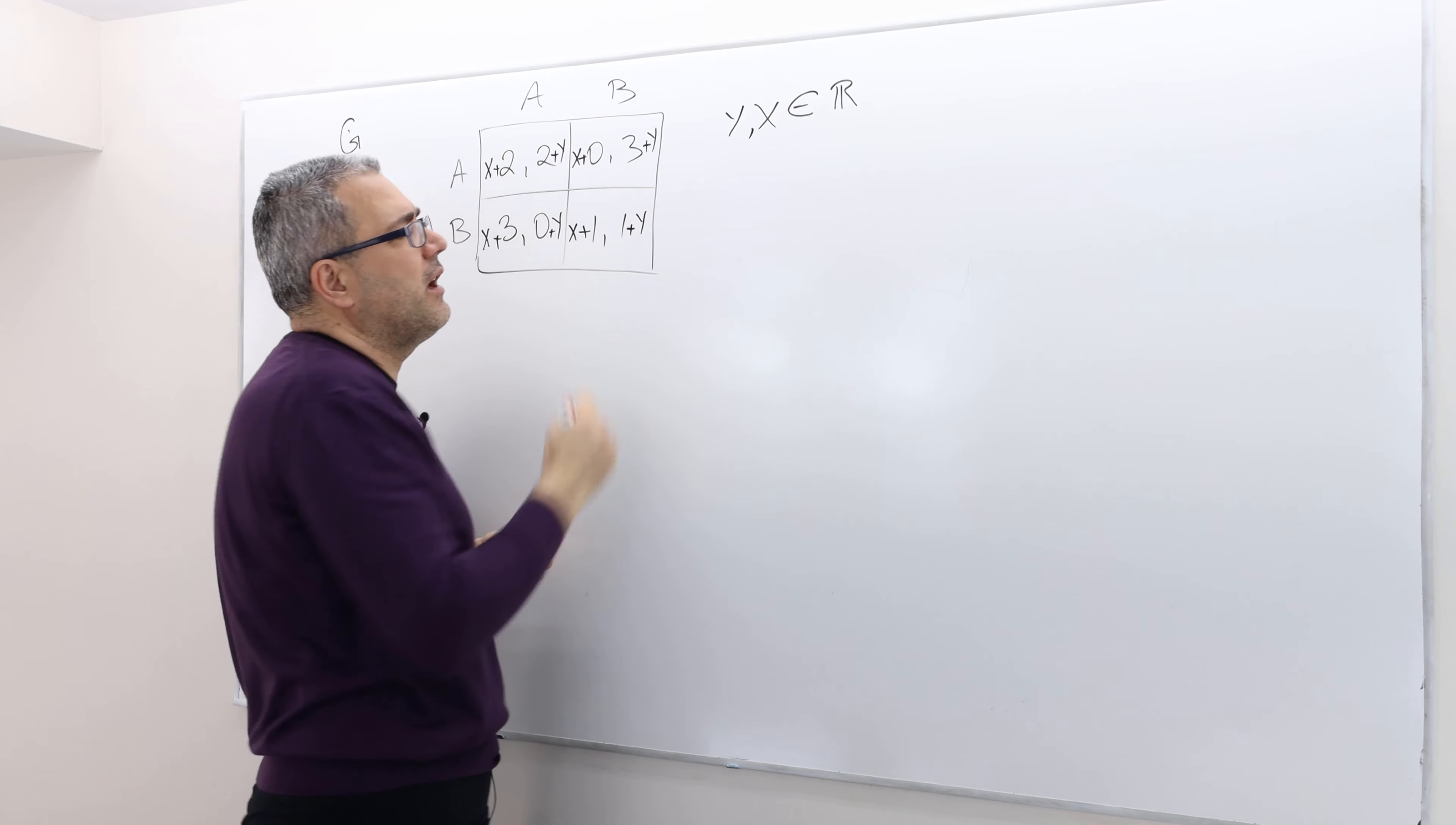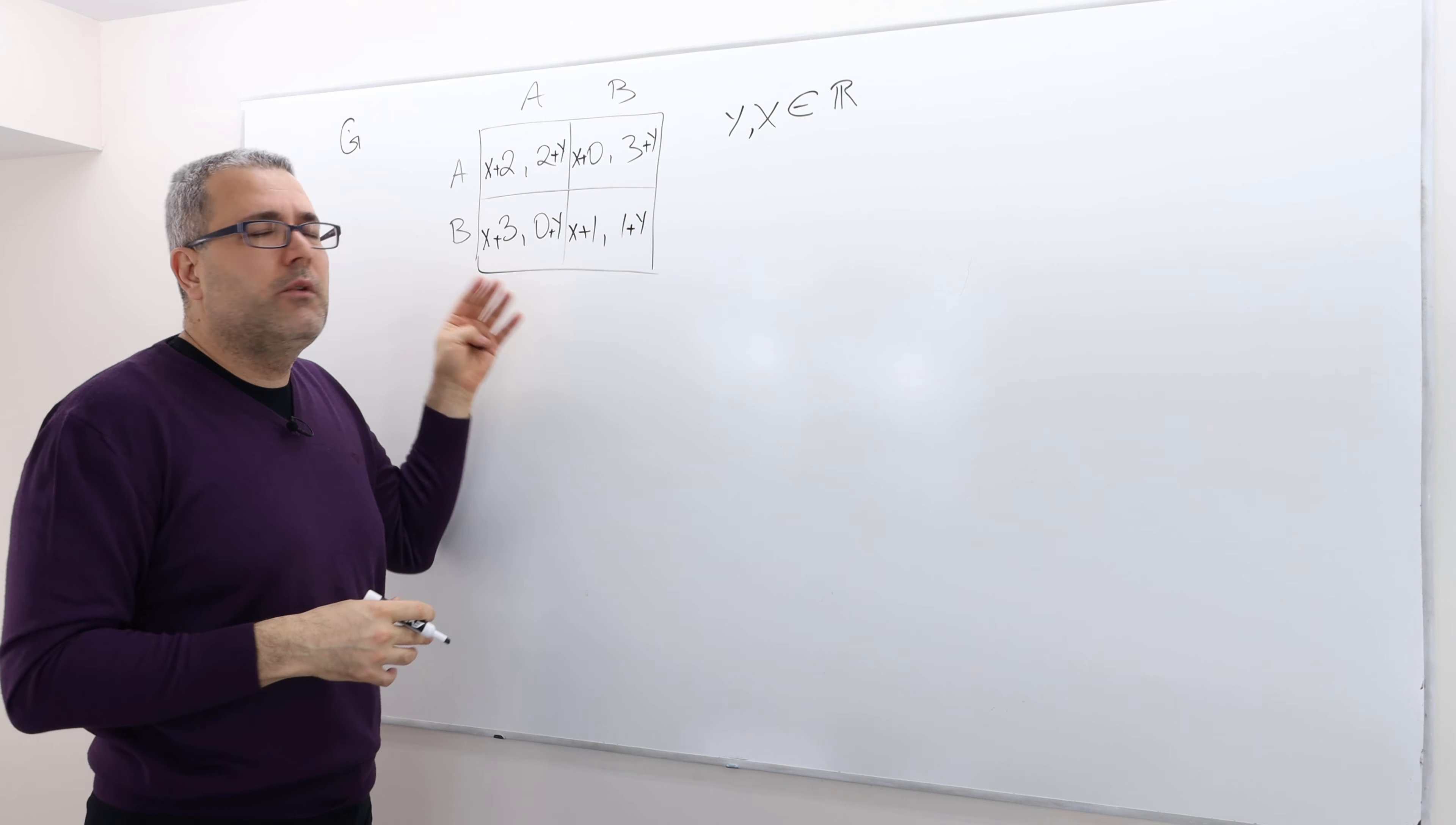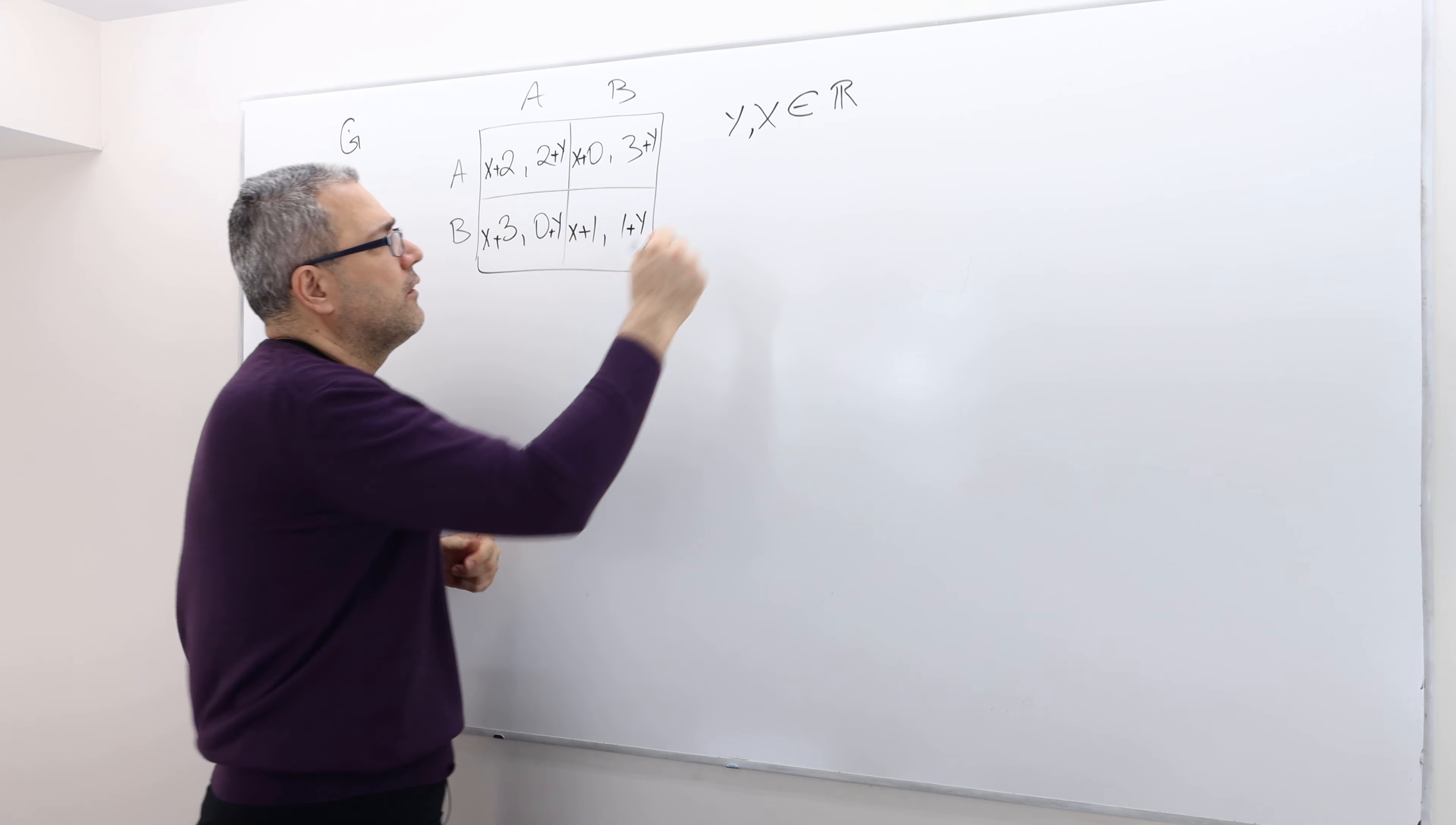And again, X and Y are just any real number. So the question is, do you think this game is going to behave differently? What does that mean? That means, what is going to be the Nash equilibrium of this game? Well, if you do, actually, you'll see, regardless of